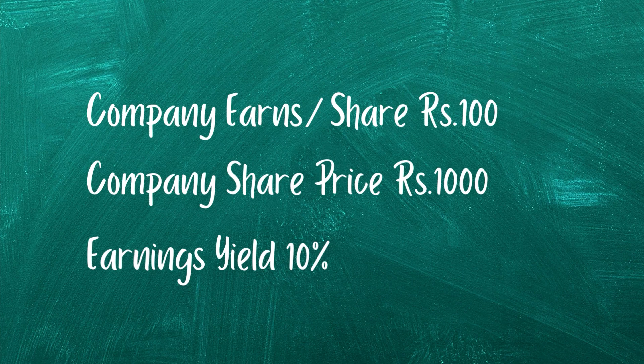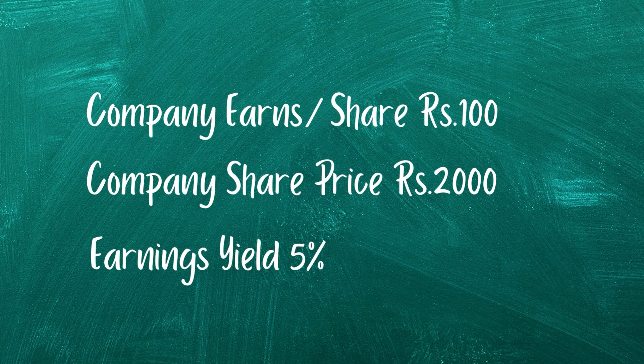If a company is actually making 100 rupees in earnings per share, and if I'm going to pay 1,000 rupees to buy that particular share, the yield I'm getting in terms of EPS — 100 rupees for 1,000 rupees — is only 10%. If I'm paying 2,000 rupees for a share with earnings per share of just 100 rupees, then the earnings yield is only 5%. This tells me whether I'm paying more or less to acquire shares from the market.